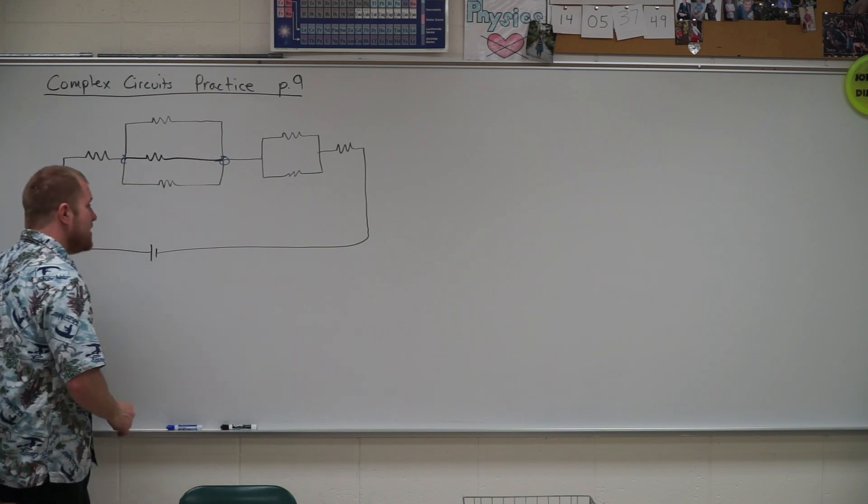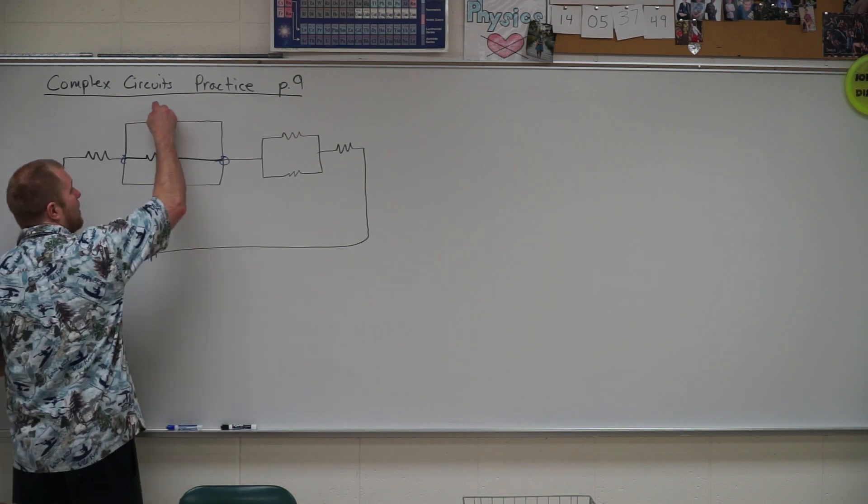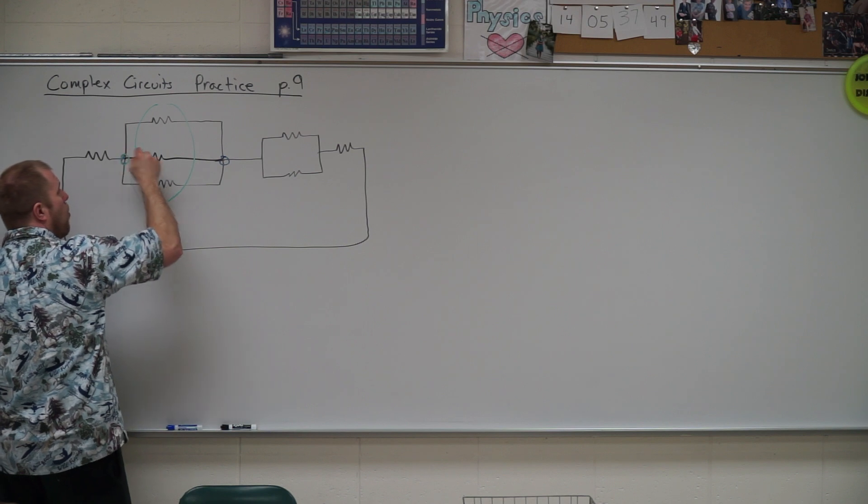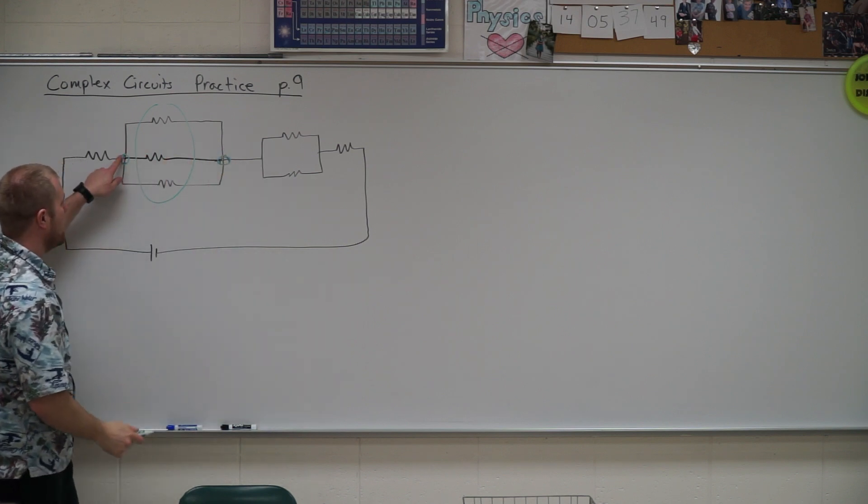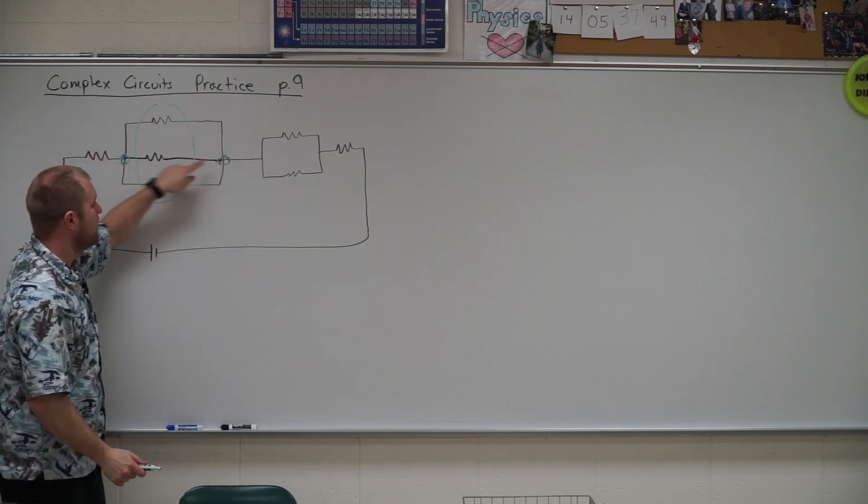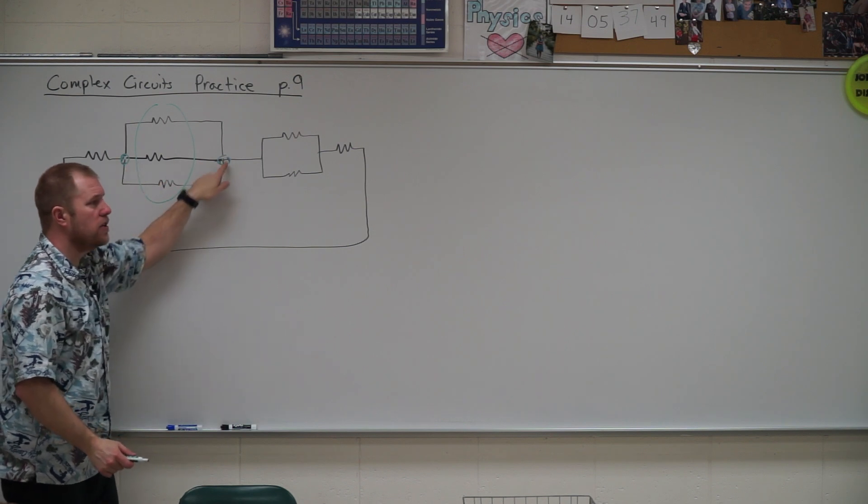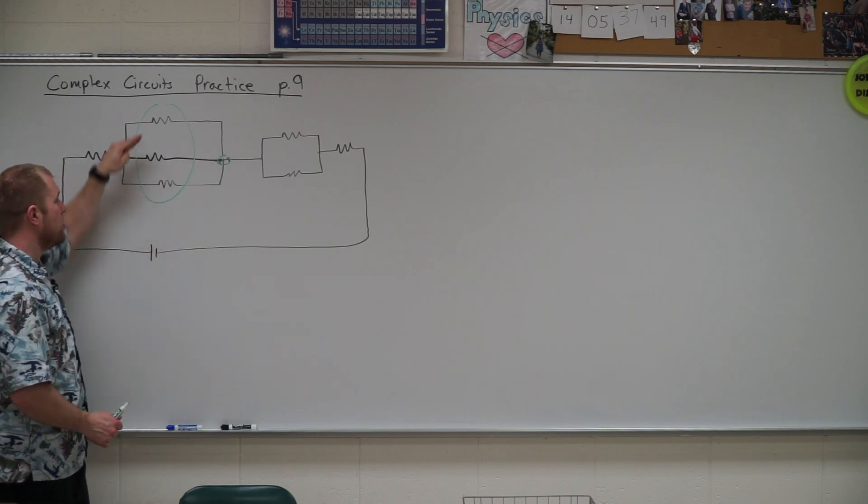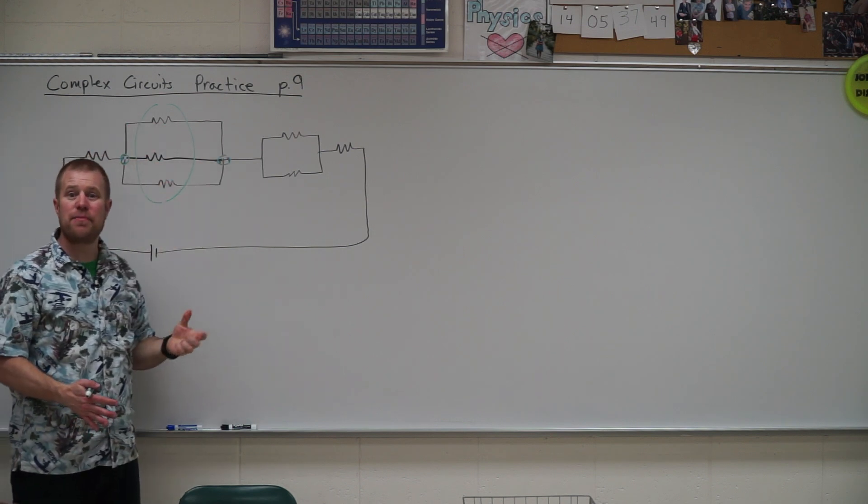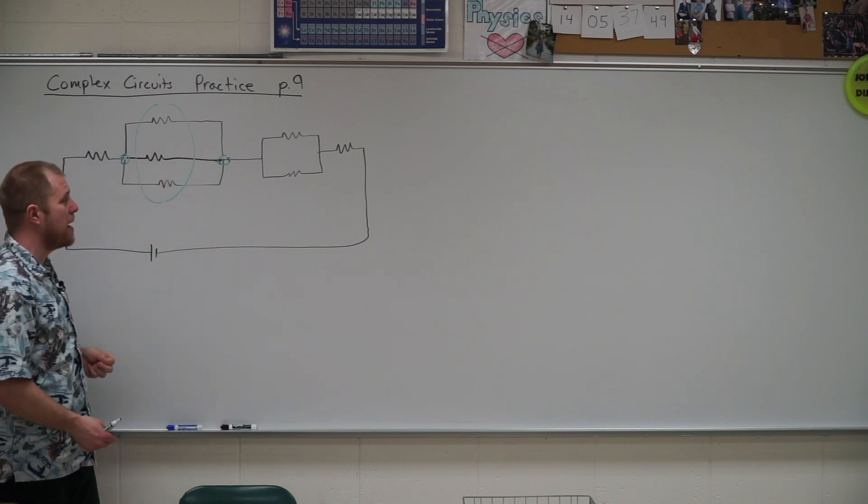Alright, so what goes next is I see I have a parallel set here - one resistor per path between those two nodes.